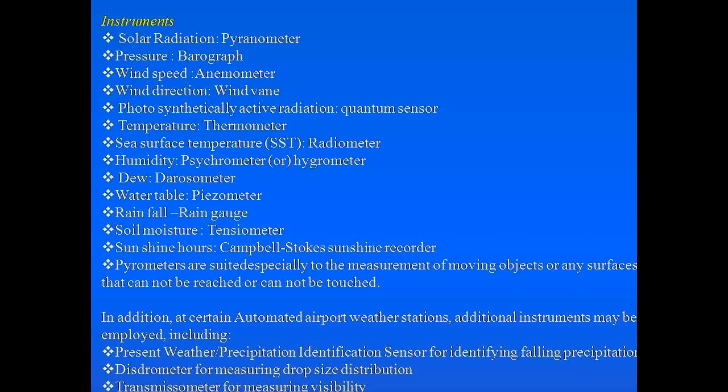At certain automated airport weather stations, additional instruments are also employed, such as sensors for identifying precipitation, distrometers for measuring drop size distribution, and transmitters for measuring visibility.